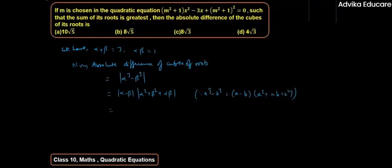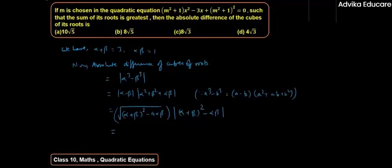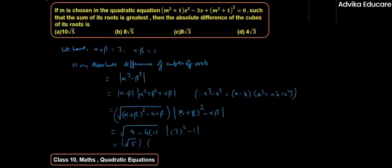We can write |α - β| = √[(α + β)² - 4αβ] and α² + β² + αβ = (α + β)² - αβ. Substituting: α + β = 3 and αβ = 1 gives √(9 - 4) = √5, and (9 - 1) = 8. So the absolute difference of cubes = √5 × 8 = 8√5. Therefore option B, 8√5, is the correct answer.